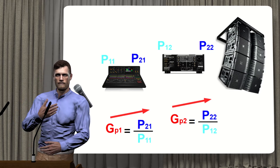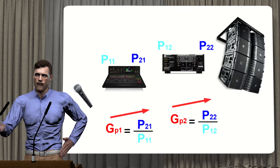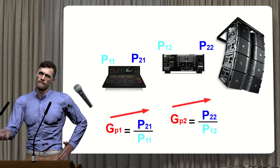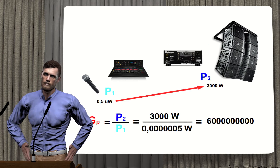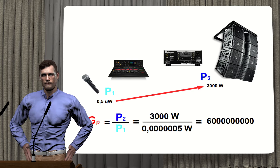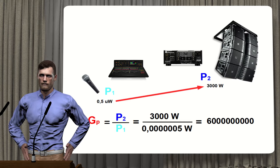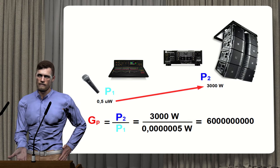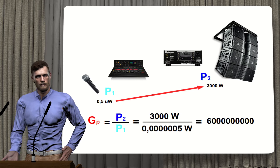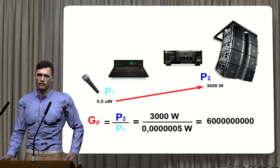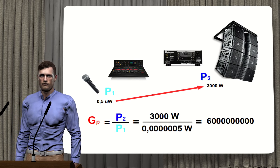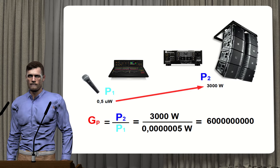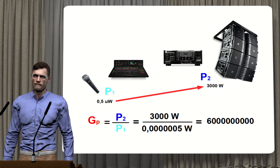In the case of the concert example, the microphone's output power was only 0.5 microwatts, while the amplifier's output power was 3000 watts, so the gain would be 3000 divided by 0.0000005, which equals 6 billion — a very difficult number to handle.